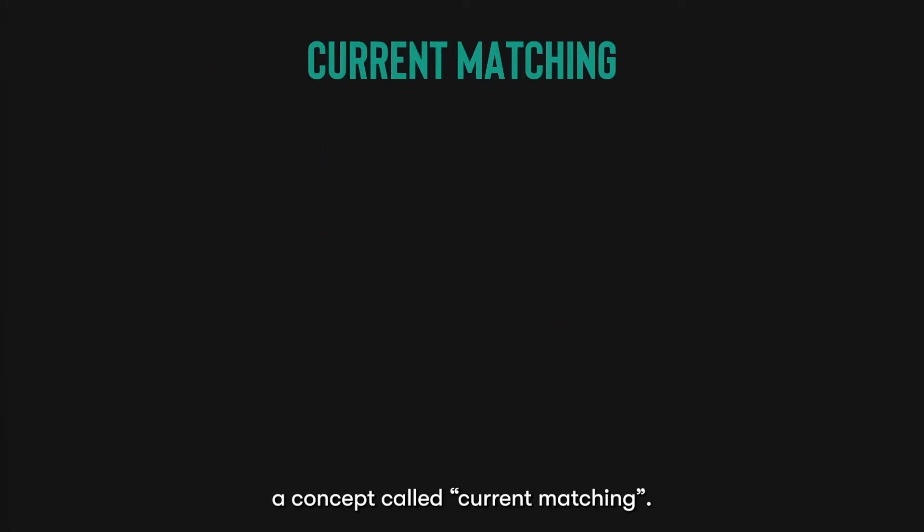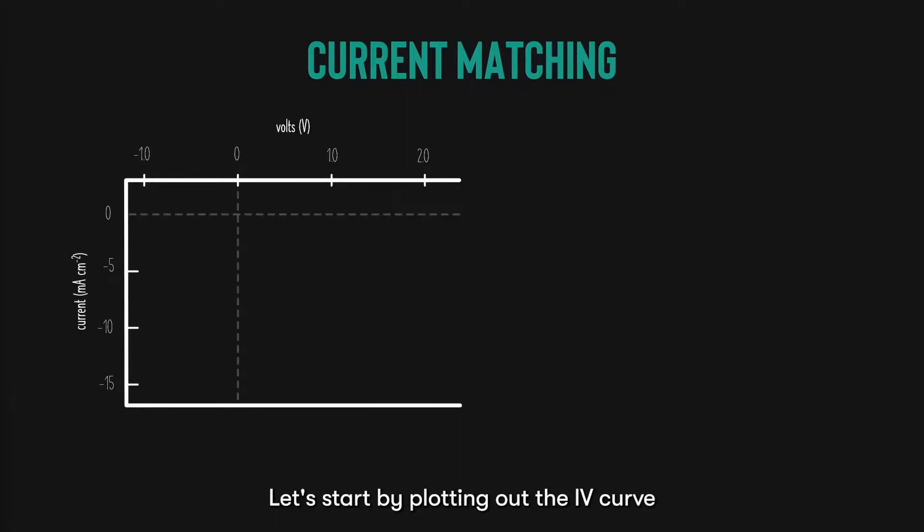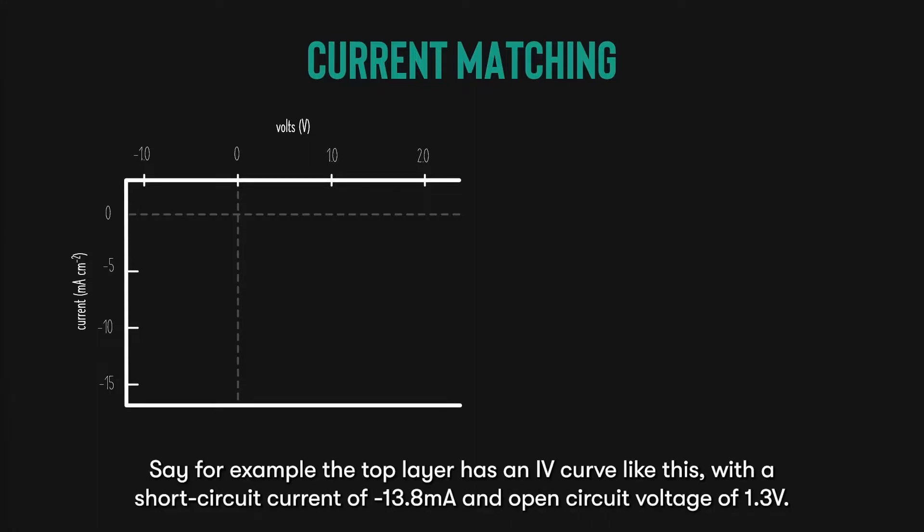Before we dive into this, I wish to introduce a concept called current matching. Let's start by plotting out the IV curve for a multi-junction solar cell. Say, for example, the top layer has an IV curve like this, with a short circuit current of negative 13.8 milliamps and open circuit voltage of 1.3 volts.